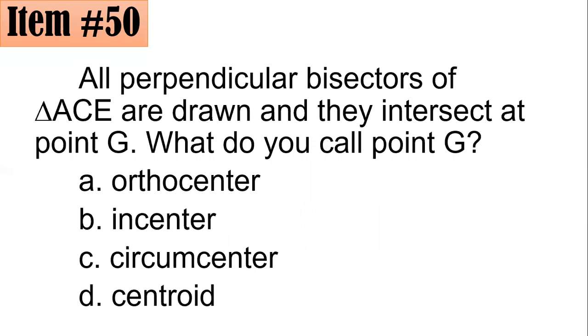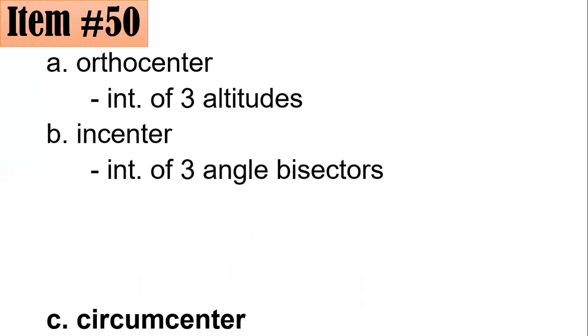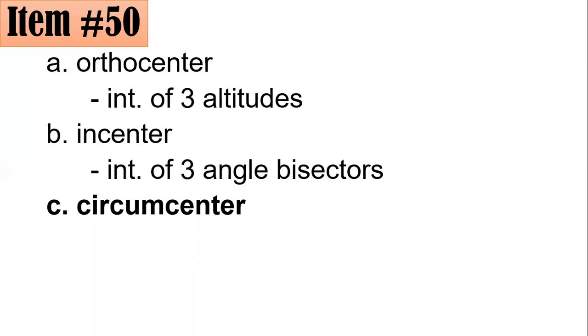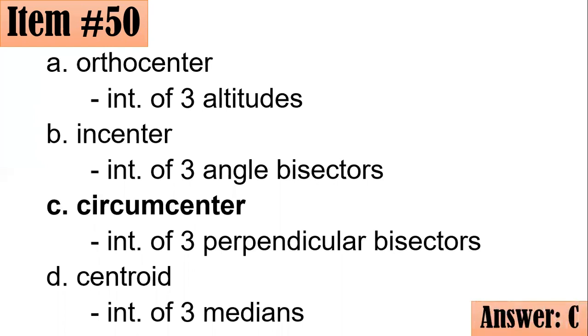Let's discuss these choices. When we speak about orthocenter, it is the intersection of the three altitudes. Incenter is the intersection of the three angle bisectors. Circumcenter is the intersection of three perpendicular bisectors. And for letter D, centroid, it is the intersection of the three medians. Hence, if you answered C, great job.